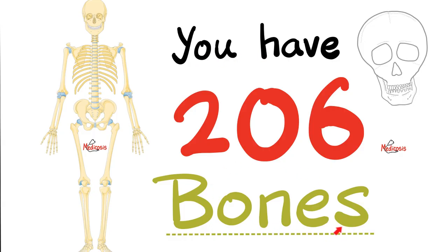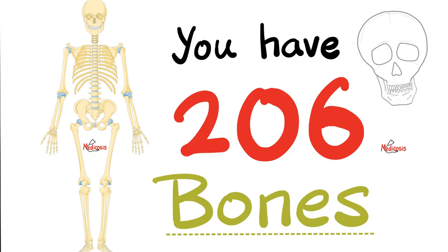How many bones do you have? It depends on how you count, but the most typical classification counts them as 206 bones, and today we're going to count them one by one. Let's talk about regions. This is your skull, all of this is your vertebral column, this is the shoulder girdle, this is the pelvic girdle, this is the thoracic cage, these are the upper limbs or upper extremities, and these are the lower limbs or lower extremities.